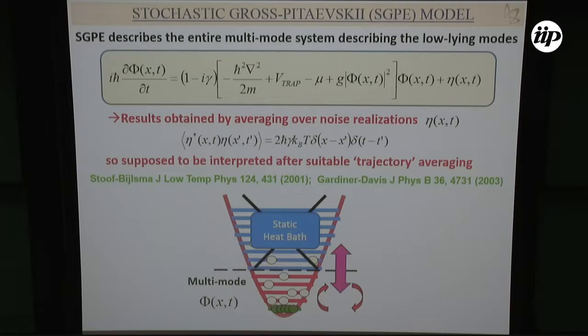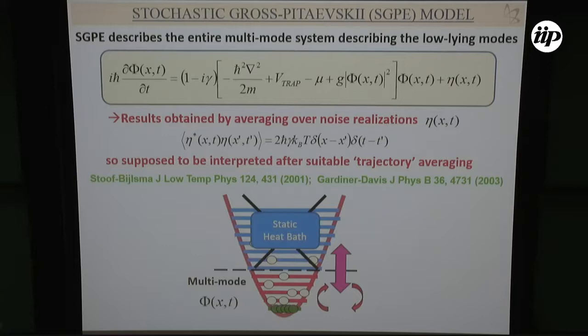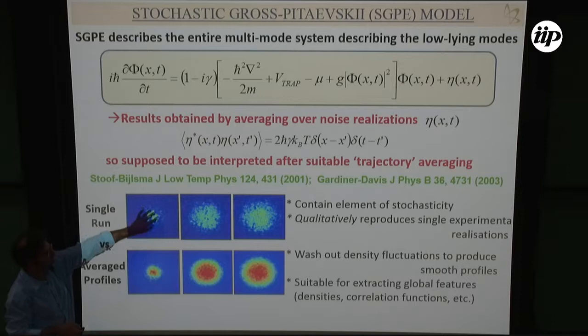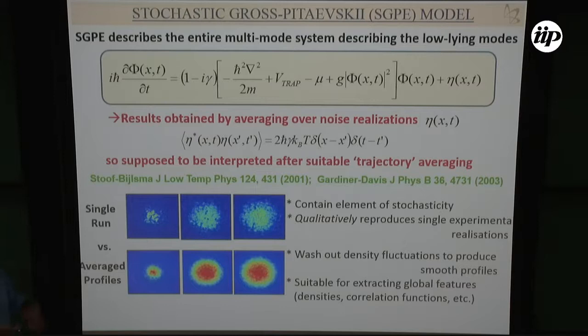This equation is easy to solve numerically. You start with a noise seed — you can work out analytically what you'd expect that noise to be — and then propagate in time. In a 2D setting, a single run gives some kind of growth into the system with many fluctuations. If you want global properties like correlation functions or density profiles, or if you want to count defect statistics, you have to do appropriate averaging over many realizations.